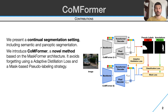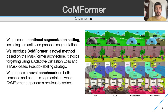To avoid forgetting, we introduce an adaptive distillation loss and a mask-based pseudo-labeling strategy. To assess the benefits of our approach, we present a benchmark on both semantic and panoptic segmentation, adapting previous baselines for the novel setting, demonstrating that Conformer achieves state-of-the-art results.